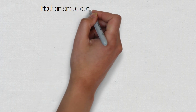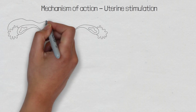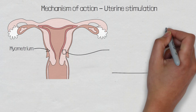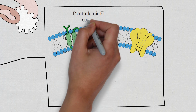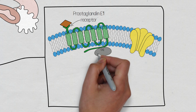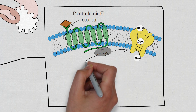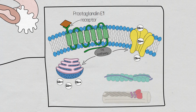Prostaglandin E1 receptors are also found within the myometrium of the uterus, which is the muscular layer located between the endometrium and the perimetrium. When prostaglandin E1 binds to its target receptors on the muscle cells within the myometrium, it initiates the GQ pathway, which leads to an influx of calcium into the cell as well as the release of calcium from within the sarcoplasmic reticulum of the muscle cell. This leads to an overall combined increase in intracellular calcium levels, which causes stronger and more frequent contractions of the muscle fibres within the uterus.